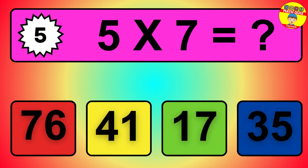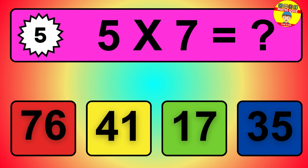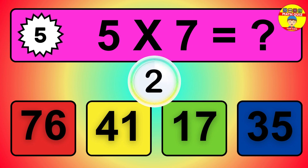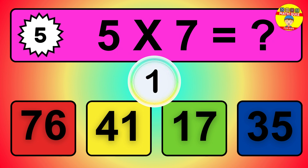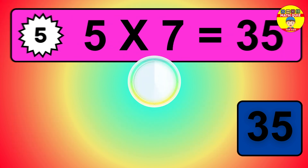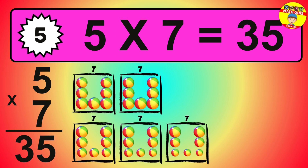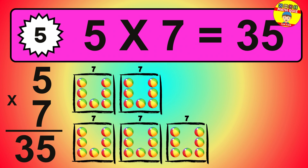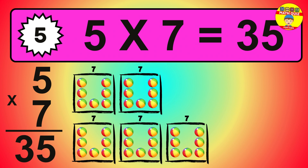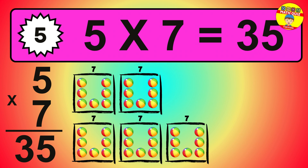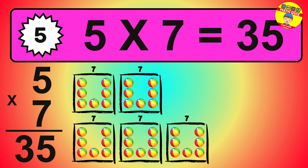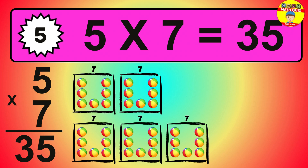Question 5. 5 times 7 equals what? The answer is 5 times 7 is 35. To calculate, we have 5 groups with 7 balls each one. So how many balls do we have? 35 balls.